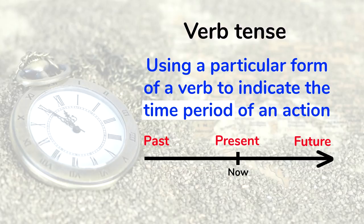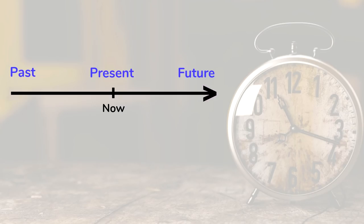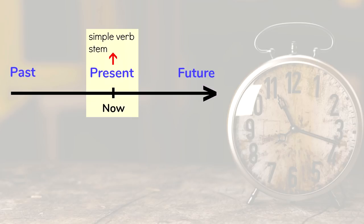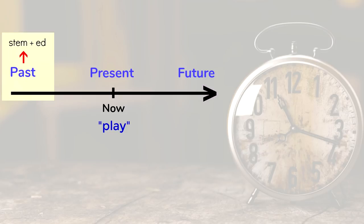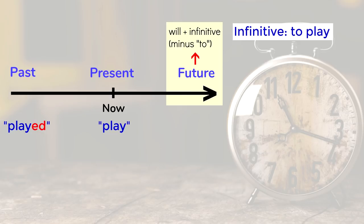In English, we basically have these three tenses. Present tense is represented by the simple verb stem, like play, for example. With regular verbs, the past tense is represented by the stem plus the inflection ed, like played, and the simple future tense is formed by placing the modal auxiliary verb will before the infinitive, which is based on the verb stem, for example, will play. Some linguists might argue that this future form is not actually a verb tense. We'll come back to that later.